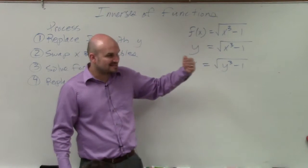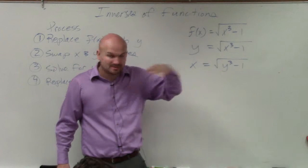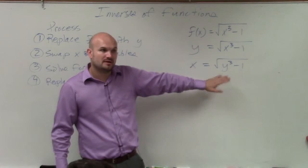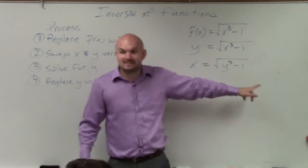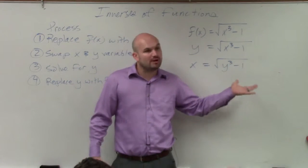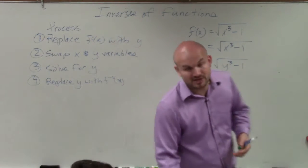Now, the last step, which was really difficult in the last one, or at least had a lot of steps, this one now we need to solve for y. Well, you can see y is being cubed by a number, being subtracted by 1, and then it's under a square root. So we have to undo the operations using the inverse order of operations.